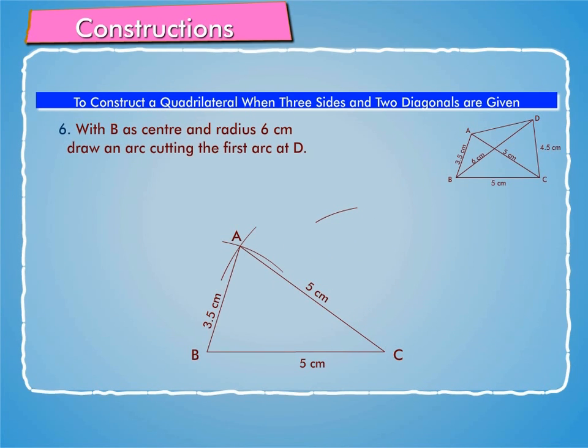Step 6: With B as center and radius 6 cm, draw an arc cutting the first arc at D.